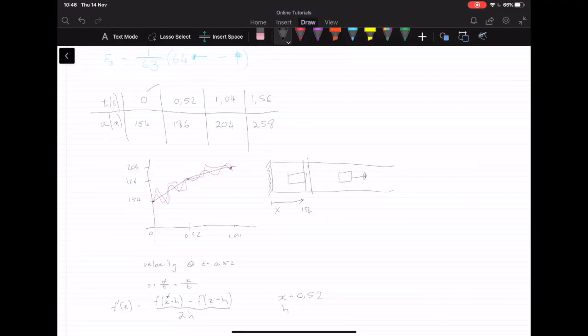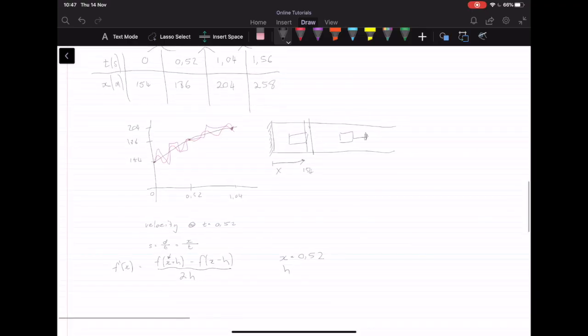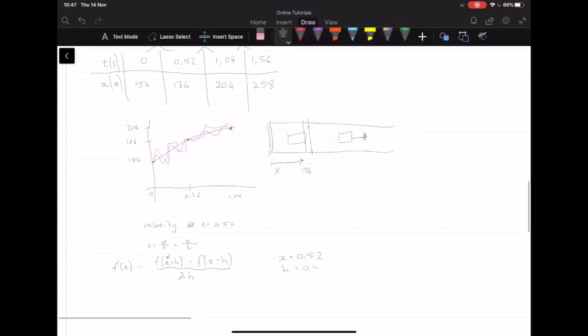And if we look here, the step size between here is 0.52. The step size on the next one is 0.52. And the step size on the next one is 0.52. So we can say that h is equal to 0.52.